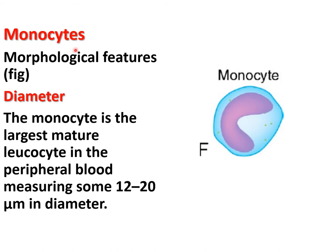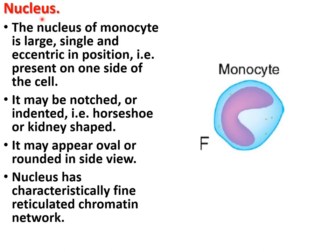The last cell is the monocyte. The diameter of the monocyte is about 12 to 20 micrometers, making it the largest mature leukocyte in peripheral blood. The nucleus is large, single, and eccentric in position, present on one side of the cell. It may be notched, indented, horseshoe-shaped, or kidney-shaped. It may appear oval or rounded in side view, and has a characteristically fine reticulated chromatin network.